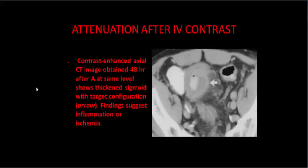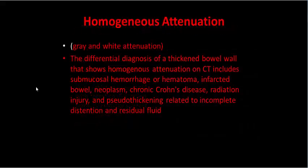After intravenous contrast, a CT obtained 48 hours later at the same level shows the sigmoid colon with a target configuration. This finding suggests inflammation or ischemia. This is the homogeneous attenuation pattern, also called gray and white attenuation. The differential diagnosis of a thickened bowel wall showing homogeneous attenuation on CT includes submucosal hemorrhage or hematoma.